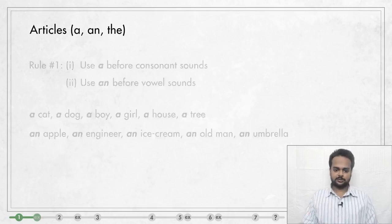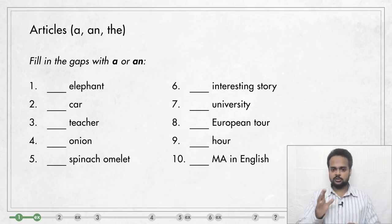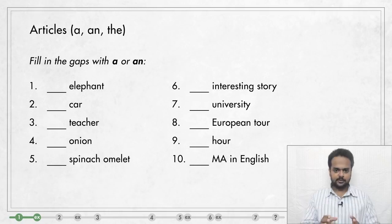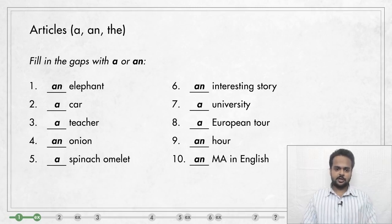Let's do a small exercise. You see ten items on the screen. For each one, I want you to say if you would use A or AN before it. Stop the video, think about it, then play the video again and check. OK, here are the answers. Did you get them all right?